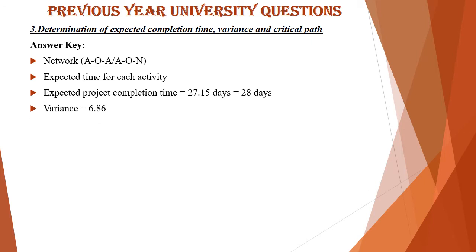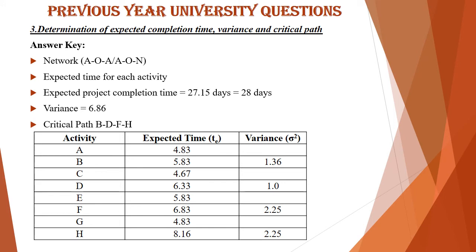Next, you have to estimate the variance. For calculating variance, the equation is: (TP − TO)² / 36. Here the variance value obtained is 6.86 and the critical path is identified as BDFH. This is presented as a table showing each activity with its expected time and variance. For every individual activity you estimate the expected time and list it in table format; the sum of the final column gives the total variance of 6.86.